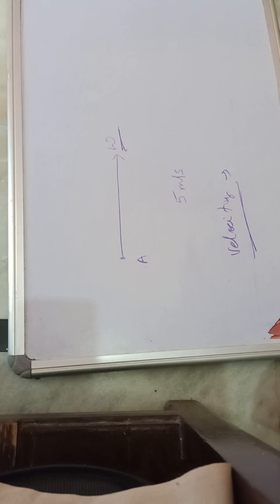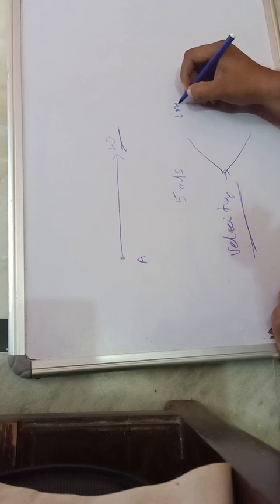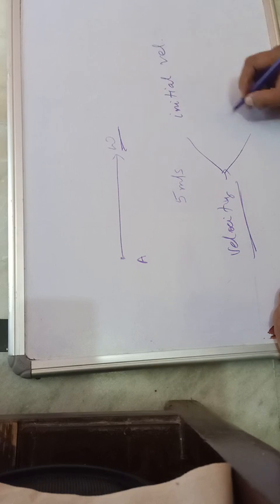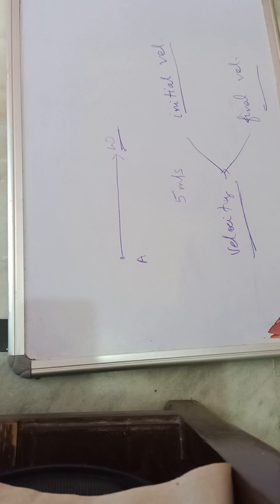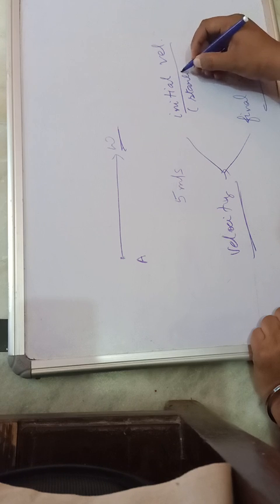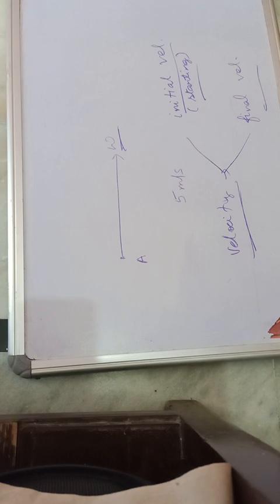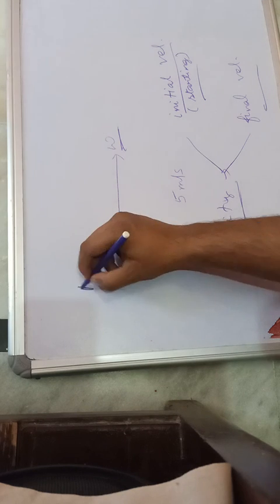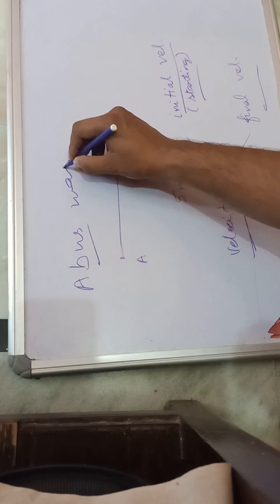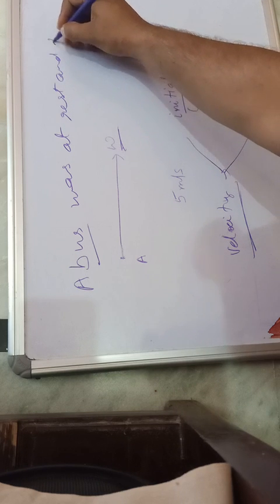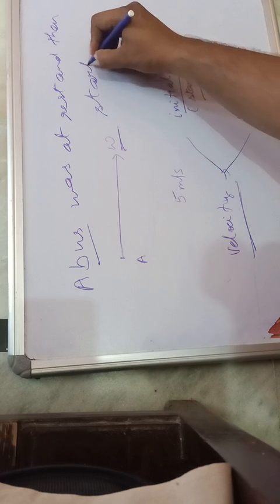Velocity is of two types: initial velocity and final velocity. The word 'initial' means starting, and 'final' means last - just like final exams means the last exams. So initial velocity is the starting velocity, and final velocity is the ending velocity.